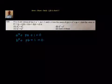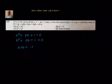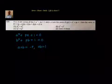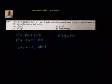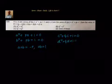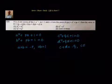We also know that sum of zeros is equal to minus of (coefficient of x) / (leading coefficient). That means a + b = −p, and product of zeros a·b = 1. In the same lines, for x² + qx + 1 with zeros c, d: c² + qc + 1 = 0, d² + qd + 1 = 0. We also know c + d = −q and c·d = 1.